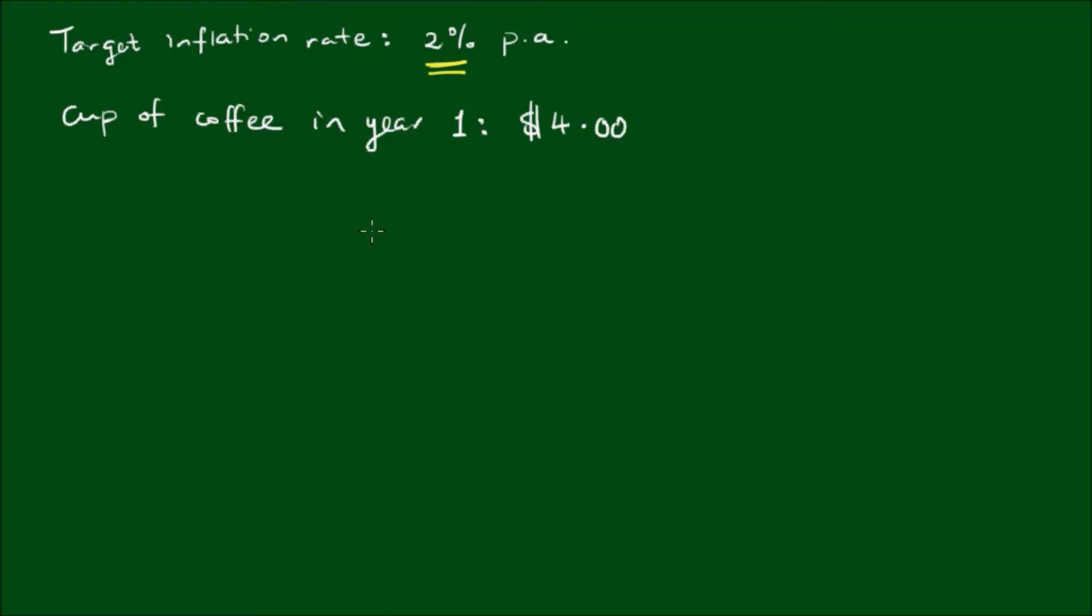After 12 months, how much do we expect this same cup of coffee to cost? In year two, after 12 months, we would expect a price increase of 2%. So we start with $4, but we have to multiply it by a growth factor of 1.02. Remember that 2% as a decimal equals 2 divided by 100, which equals 0.02. So the growth factor, GF, would be equal to 1 plus the inflation rate i.